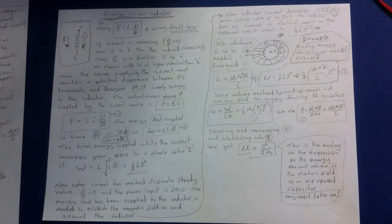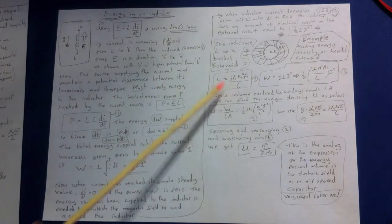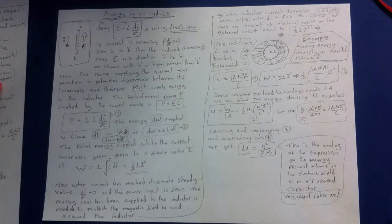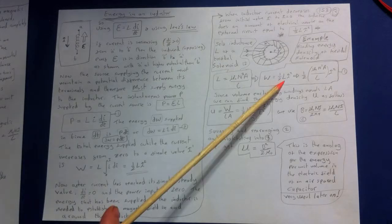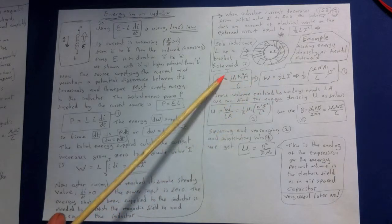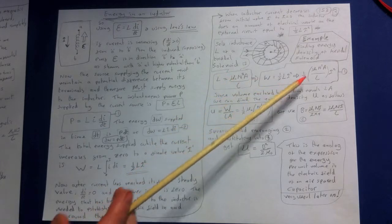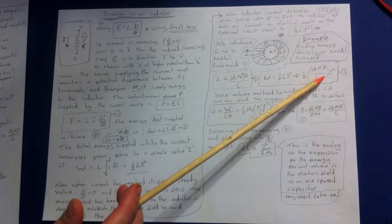Now the self-inductance L of a toroidal solenoid is given as this, where N is the number of turns, L is the length of the circumference again. When current in windings is I, the energy stored in toroid is this. So then we just replace the L in here and we end up with this equation here.